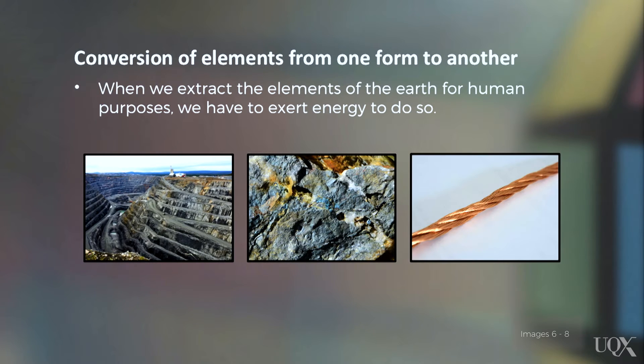Thus, copper ore is converted to copper by investing energy through both chemical reactions and heat. The element copper's actual amount on the planet remains stable, but it is converted from one form to another. The only way we can change one element into another is through a nuclear reaction; otherwise, we are merely changing the chemical composition and accessibility of the element.